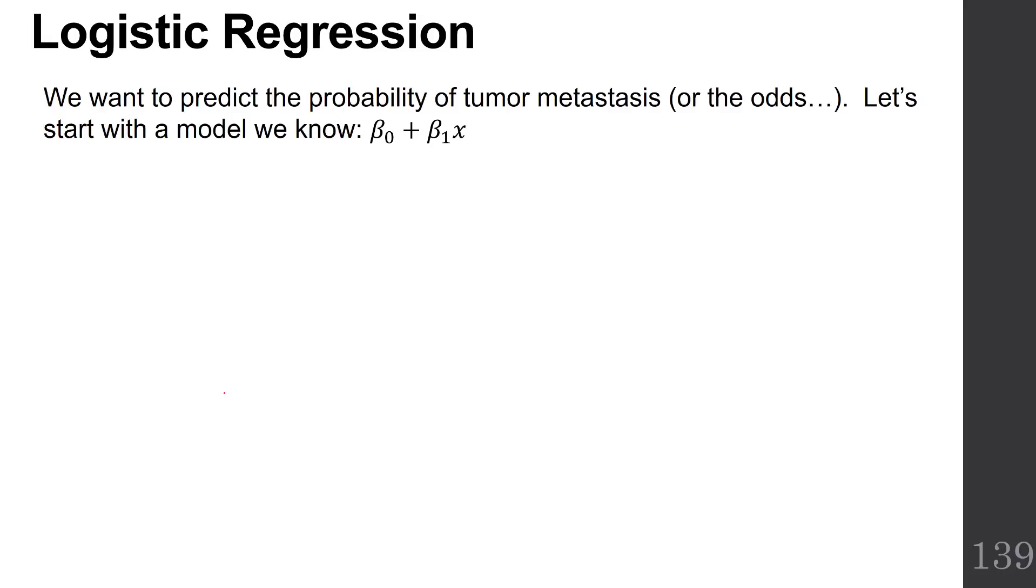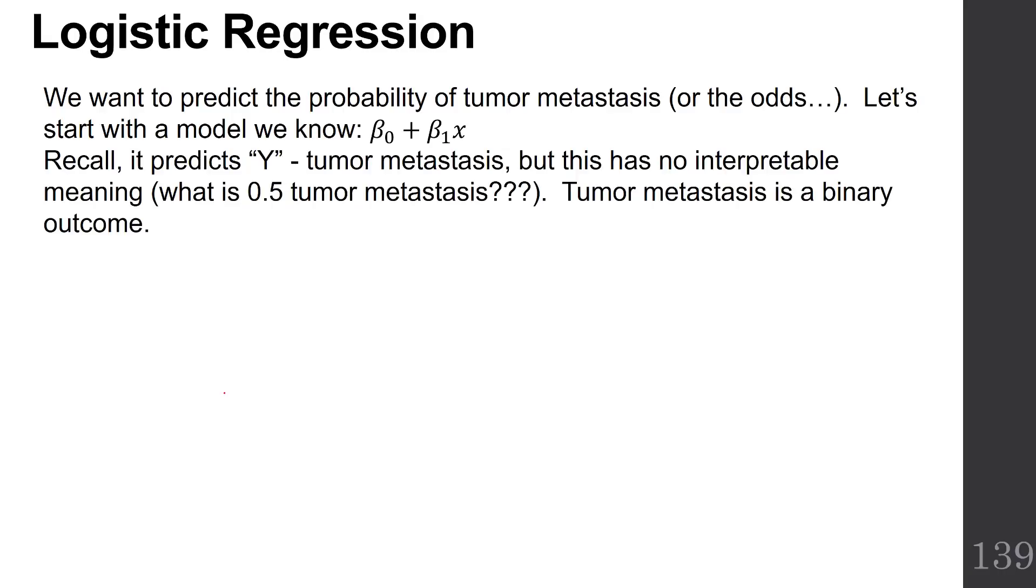Let's start with a model that we know, beta naught plus beta 1x. Recall that it predicts y, but this has no interpretable meaning. What is a half of a tumor metastasis? Tumor metastasis is a binary outcome.